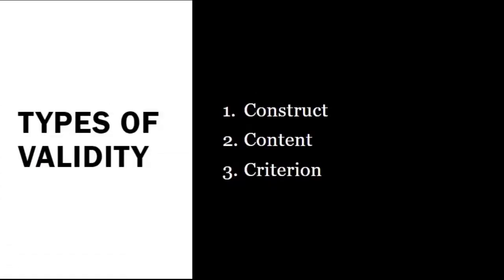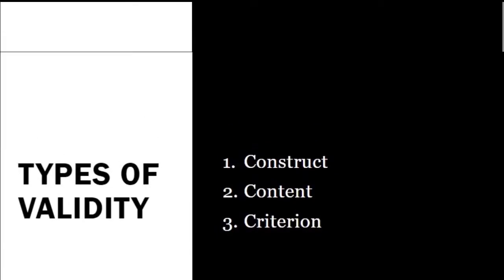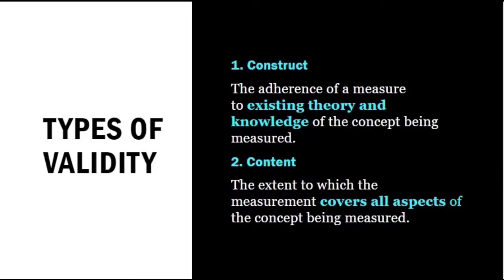The types of validity are construct, content, and criterion. Construct validity refers to the adherence of a measure to existing theory and knowledge of the concept being measured. For example, if depression criteria from the DSM are used to develop a questionnaire, that questionnaire is based on existing theory and knowledge — it has valid construct. Content validity refers to the extent to which the measurement covers all aspects of the concept being measured.